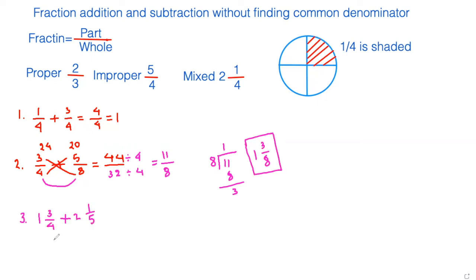So our next question is, we are adding 1 and 3 fourth and 2 and 1 fifth. Here also, if you notice that we have a mixed fraction. The mixed fraction, we can do addition operation like that. So we have to, from mixed, we have to convert it to improper.